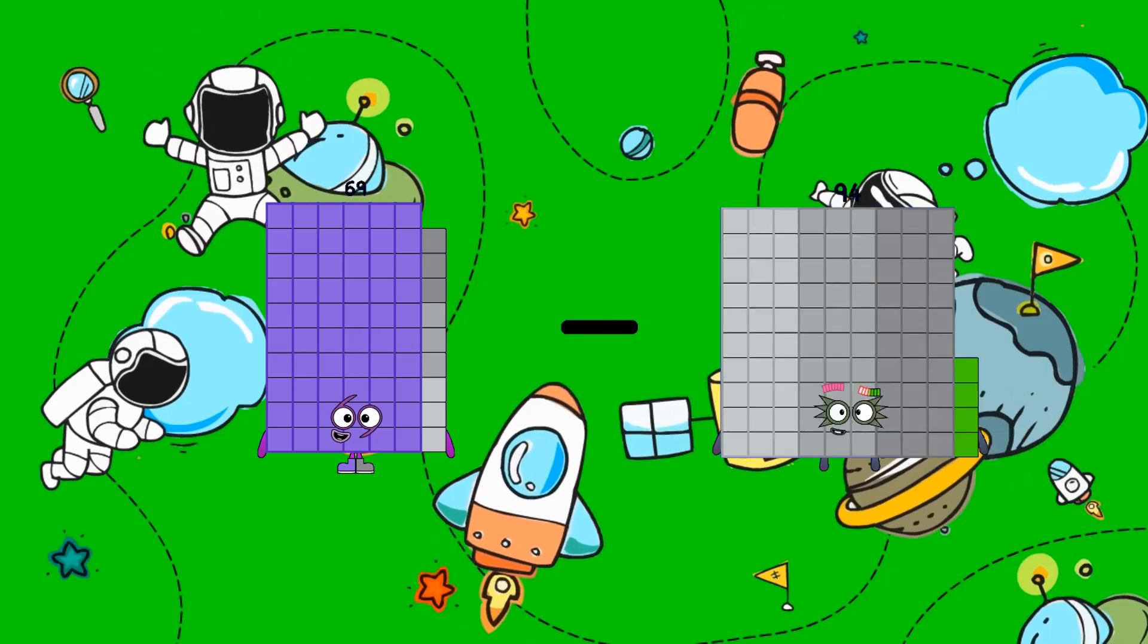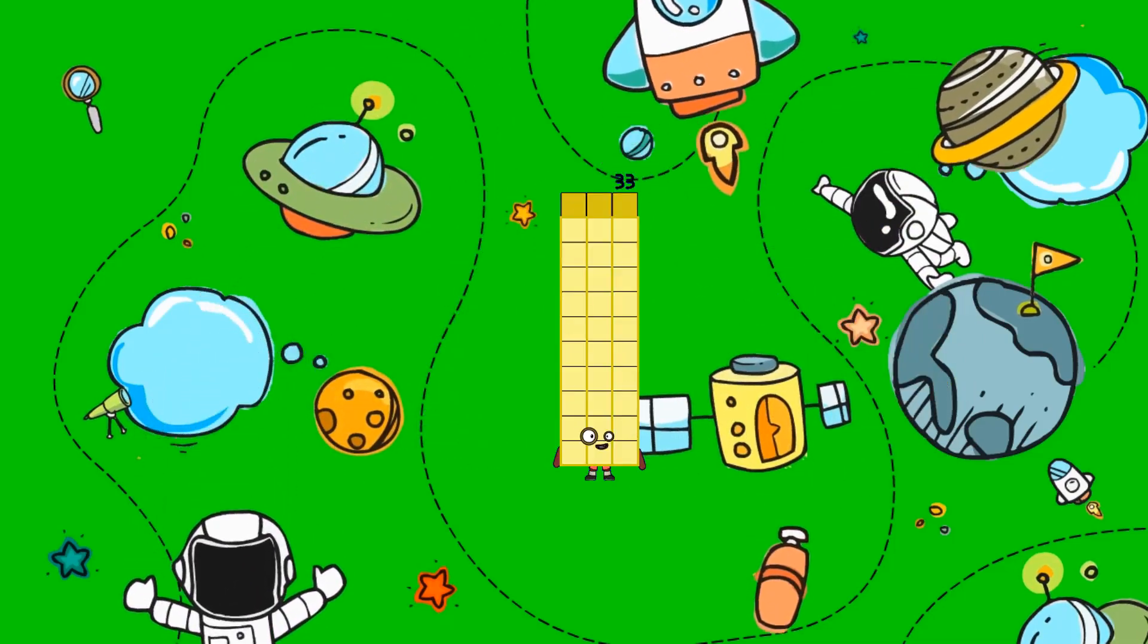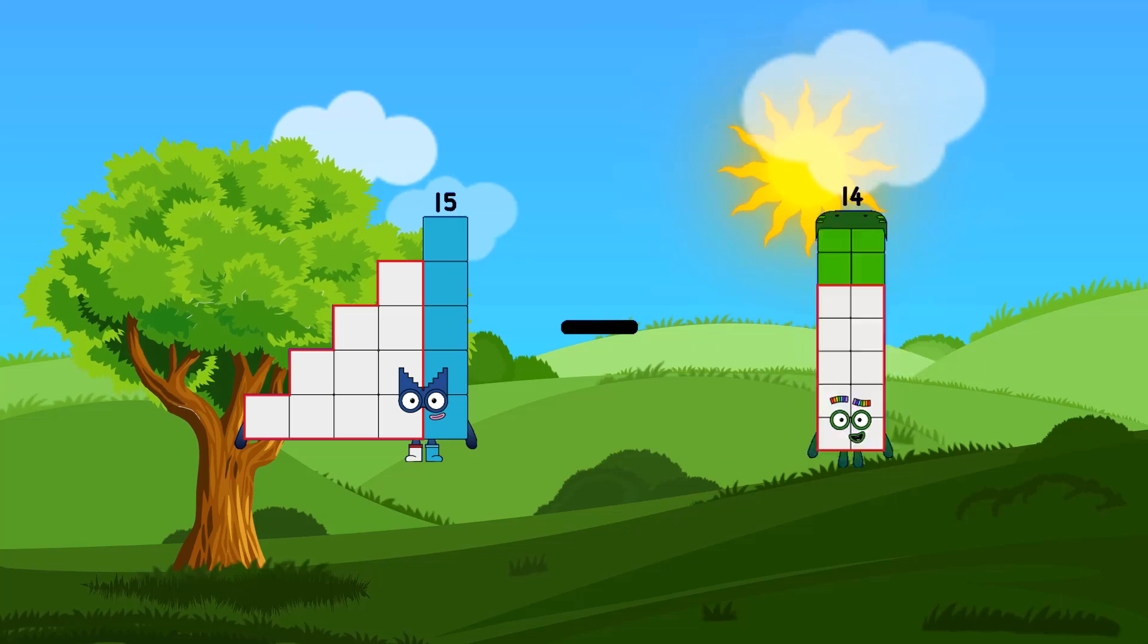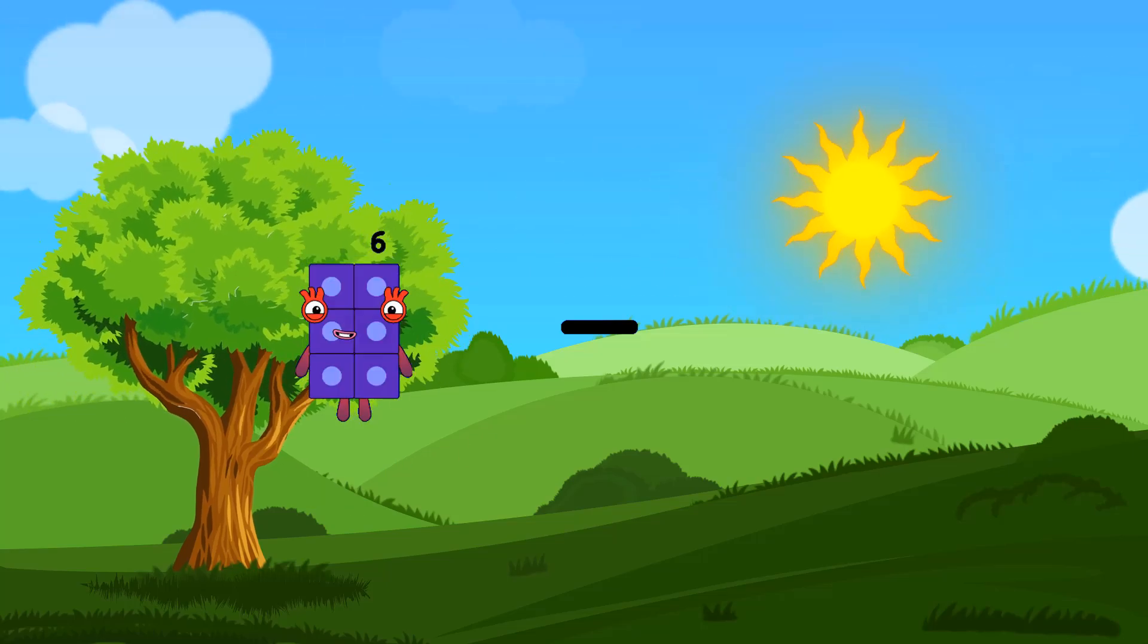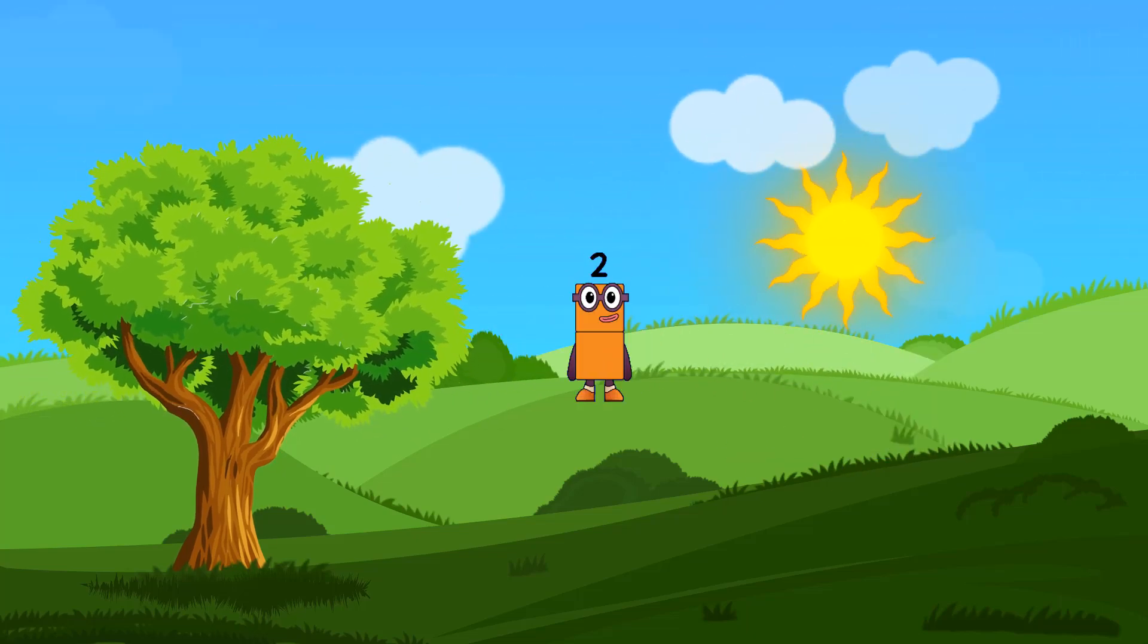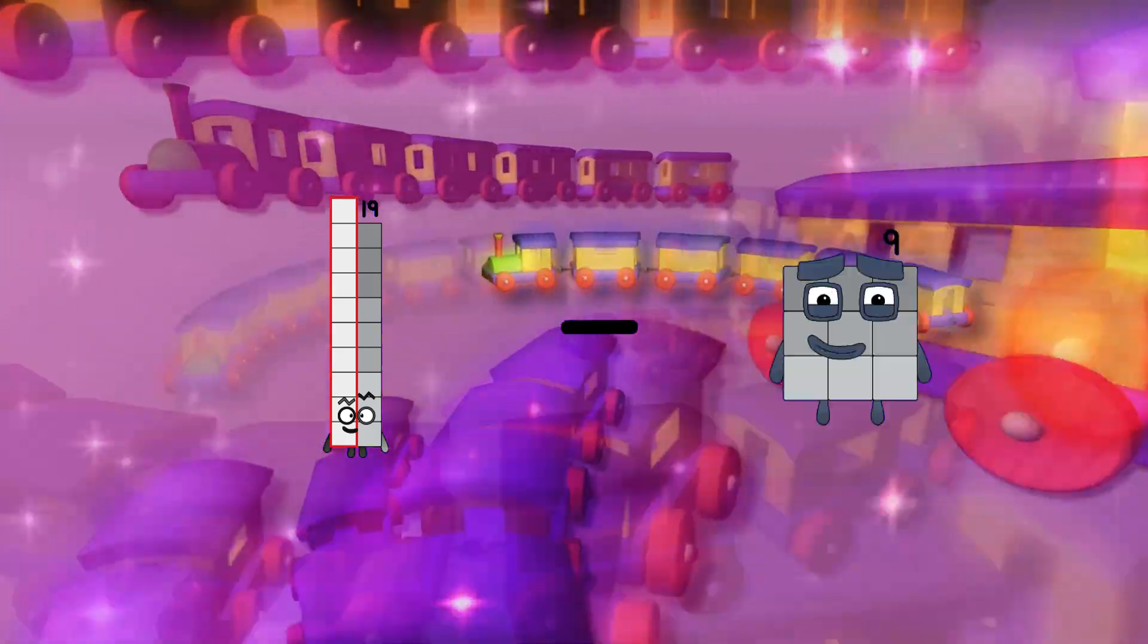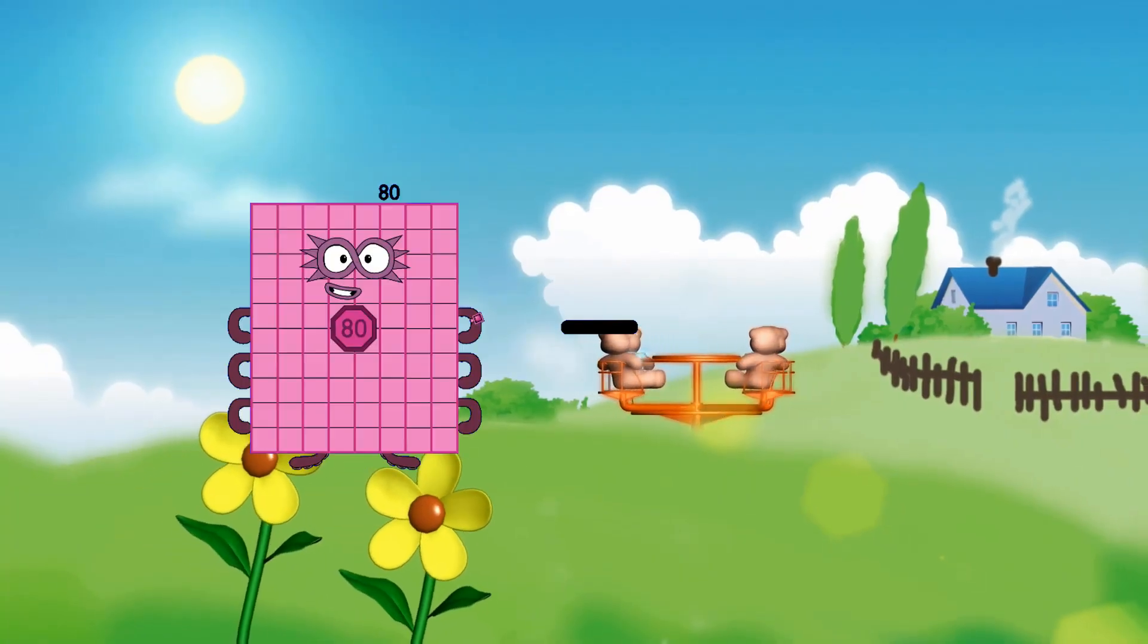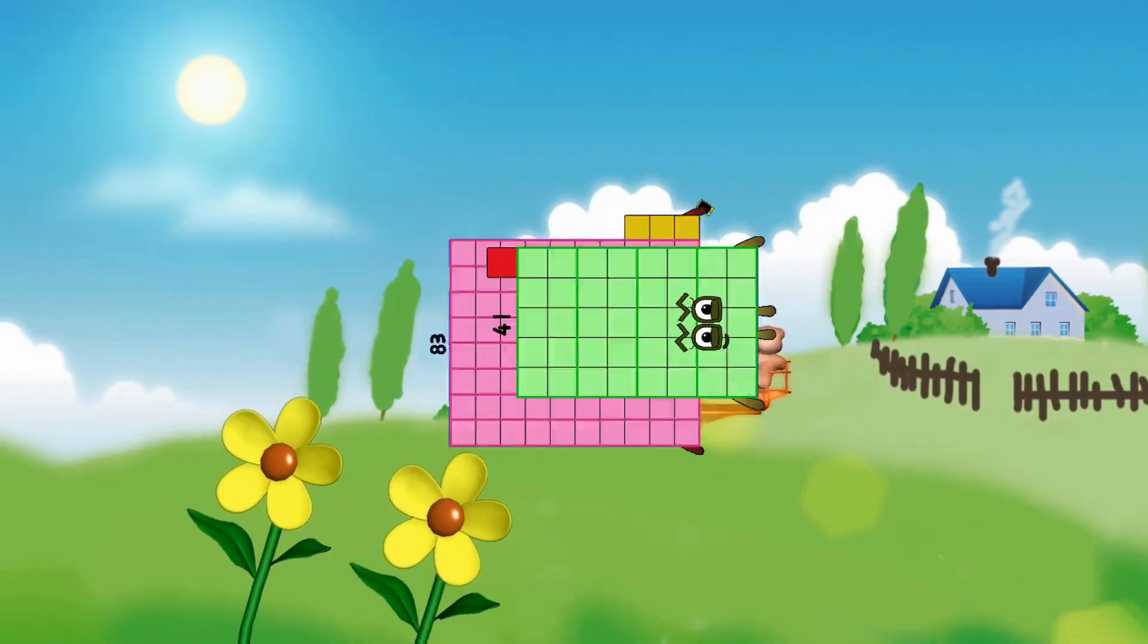69 minus 36 equals 33. 15 minus 9 equals 6. 6 minus 4 equals 4. 19 minus 1 equals 18. 83 minus 41 equals 42.